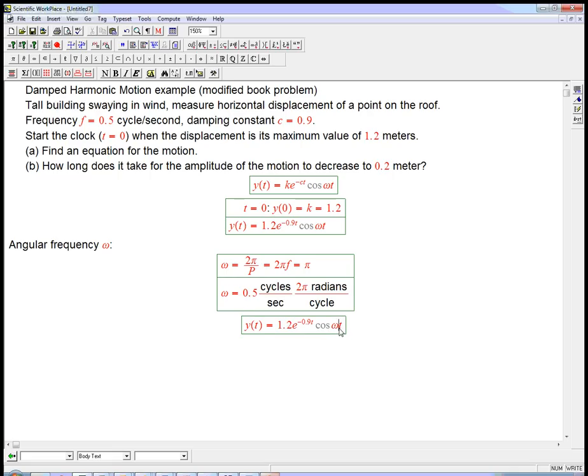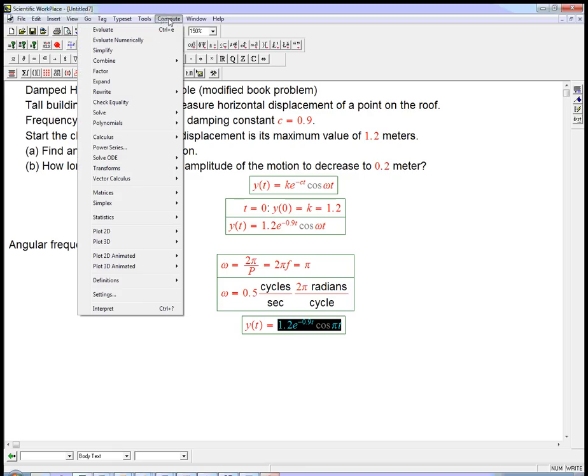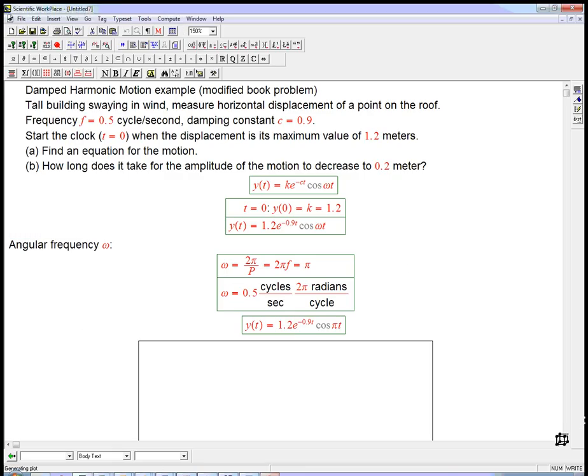So that's a very explicit function. Overall constant stretching in the vertical direction times a decaying exponential function times a cosine. Let's graph that thing since we're on the computer and just see roughly what that looks like.